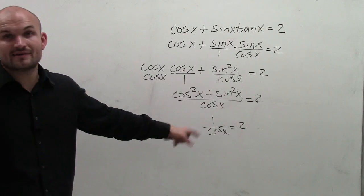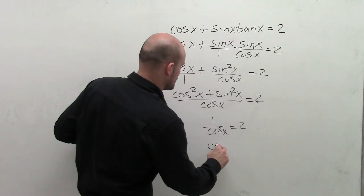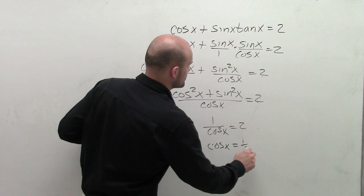So if 1 over cosine of x equals 2, then I can say that cosine of x equals 1 half.